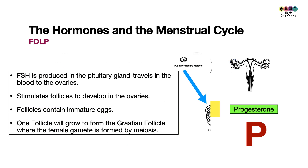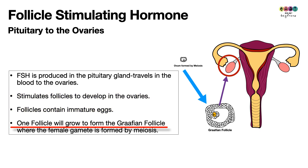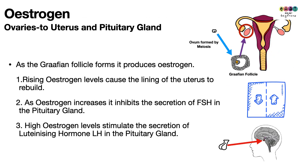First up is Follicle Stimulating Hormone, produced in the pituitary gland. It travels in the blood to the ovaries, where it stimulates follicles to develop. Follicles contain immature egg cells — oocytes. One follicle will develop into the Graafian follicle, and it is inside the Graafian follicle where the female gamete is formed by meiosis.